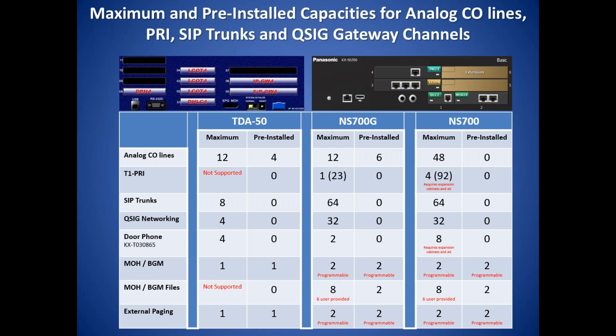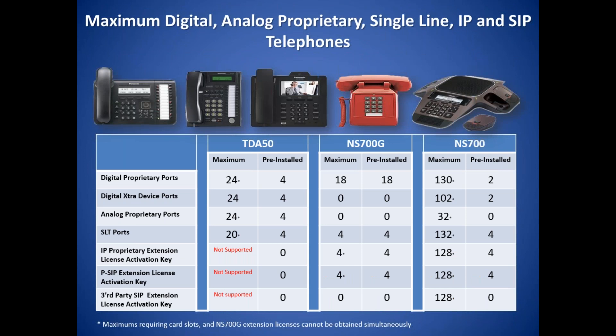The top of this slide also shows how the TDA50 and the NS700 are shown in programming. Remember that the NS700G configuration is locked. The NS700, which starts out small, can grow to fit a lot of the small to medium business market. If you configure the NS700 with non-IP phones and then need to add phones, you can add IP proprietary telephones, as the system will support the maximum of phones allowed by physical cards in the card slots and up to 128 IP proprietary telephones. The NS700 and the NS700G support current Panasonic IP proprietary telephones, Panasonic SIP telephones, and third-party SIP telephones.